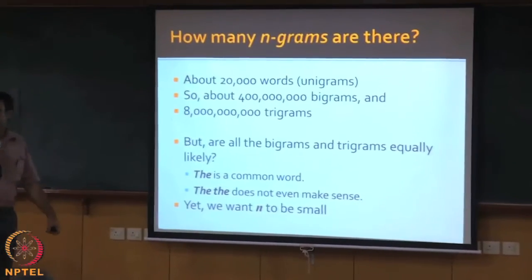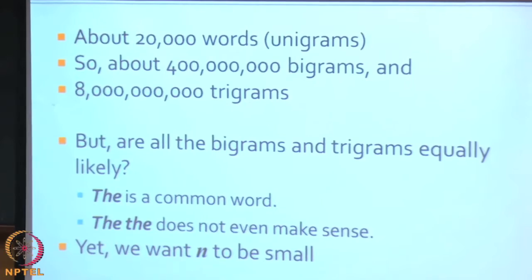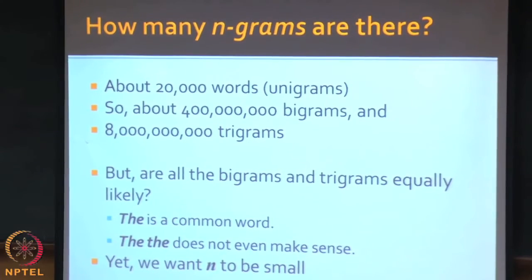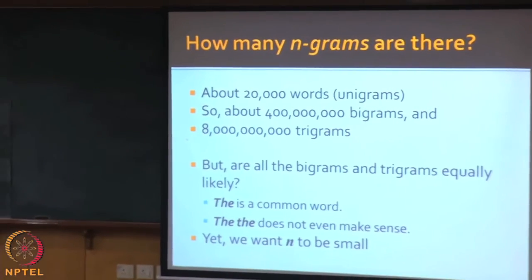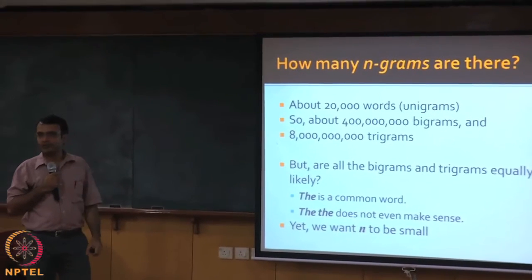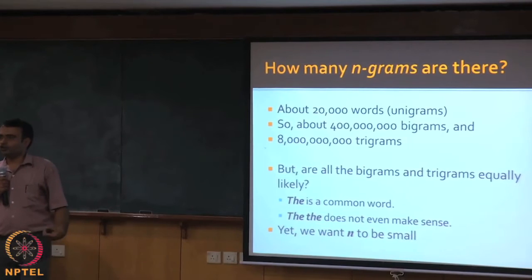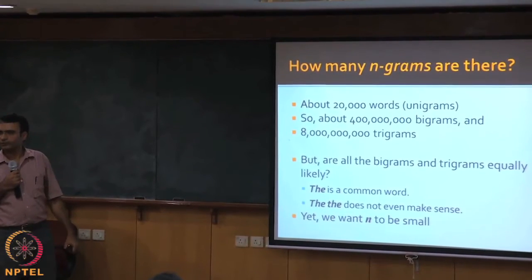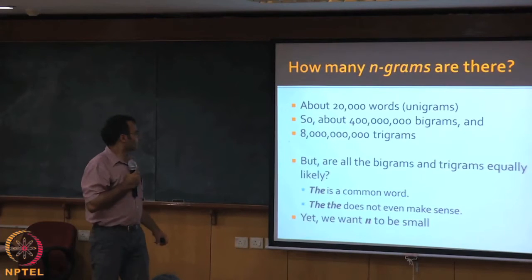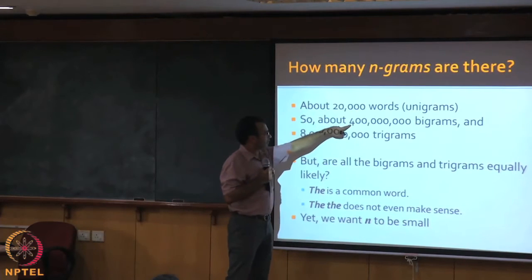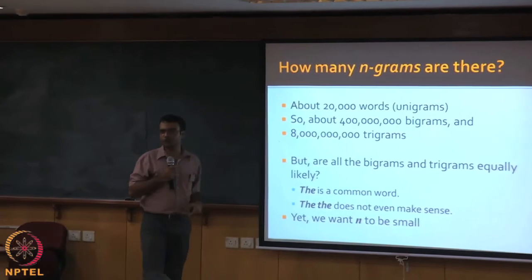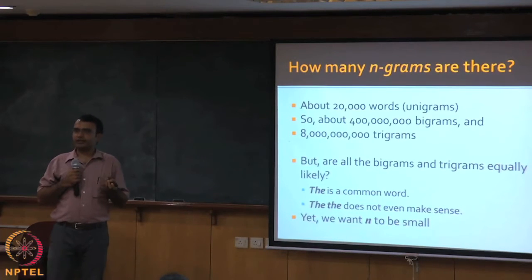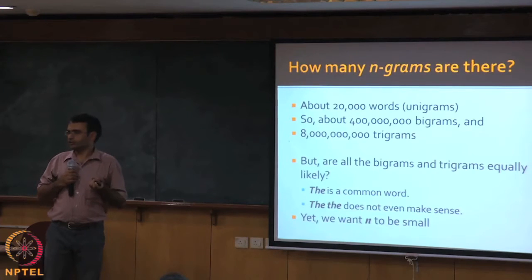How many n-grams are there? If you have 20,000 conversational words, for a bigram you will have the square of 20,000 — that is 400 million bigrams. But they're not all used in language; for example, 'the the' doesn't even make sense. So your actual space of all bigrams and trigrams is much less than all possible combinations of two or three words. When you make language models, you take that into account and only learn the n-grams you have encountered.